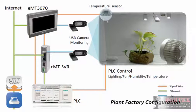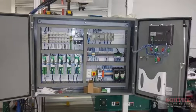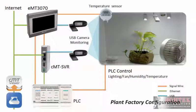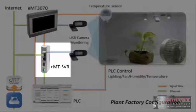In this example, we are going to show how to conduct a remote monitoring system of a plant factory using Easy Access 2.0. While a human-machine interface is generally associated with industrial manufacturing, advances in HMI hardware and software capability have opened the doors for an HMI to be used in other applications. For this case study, we will utilize two of our leading HMI models, the EMT3070 and CMT Server.